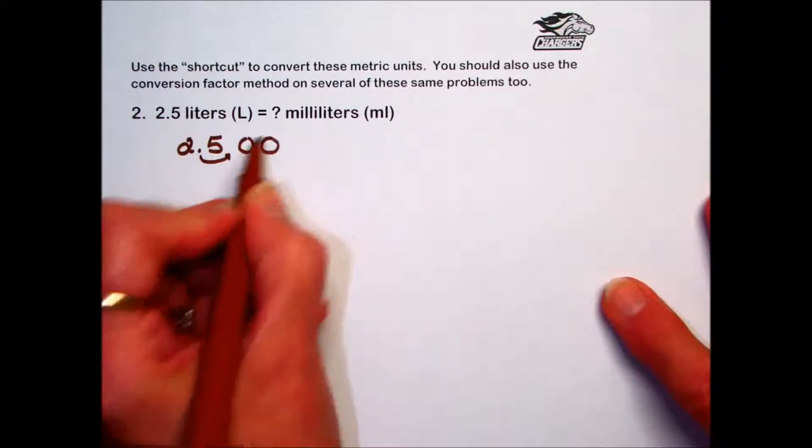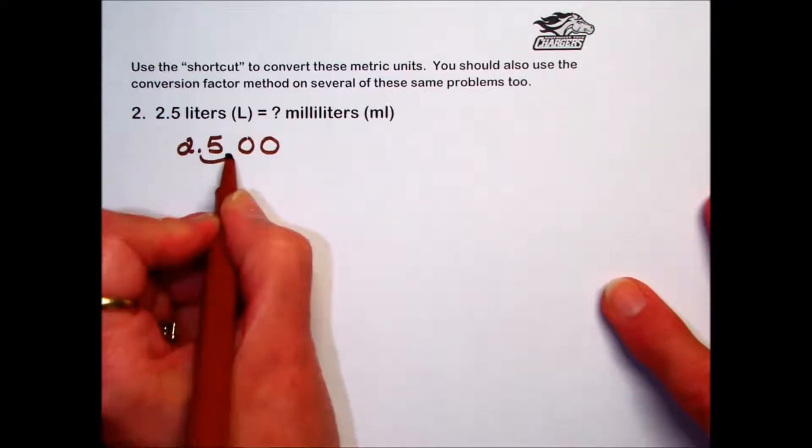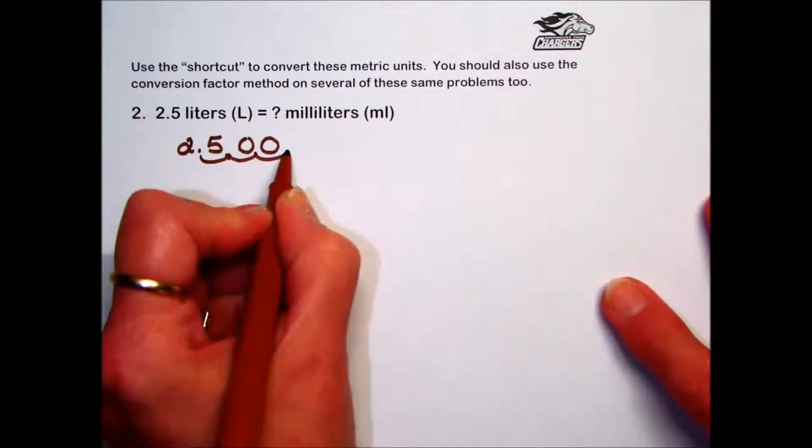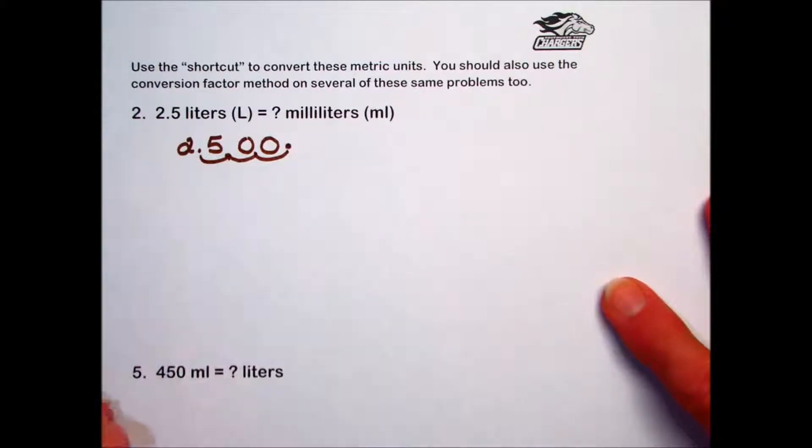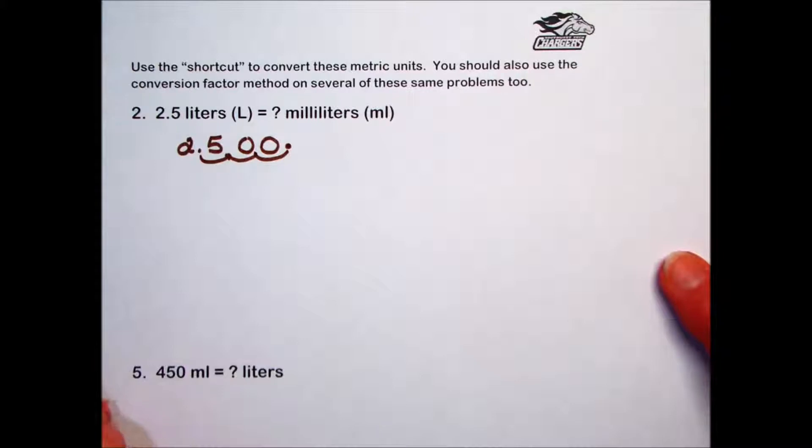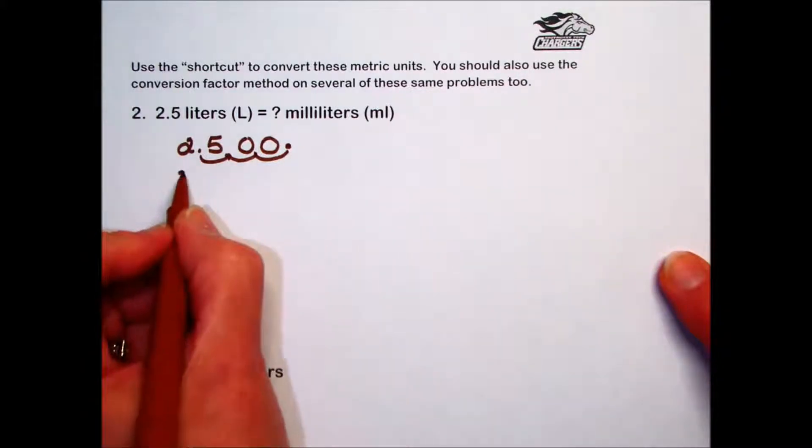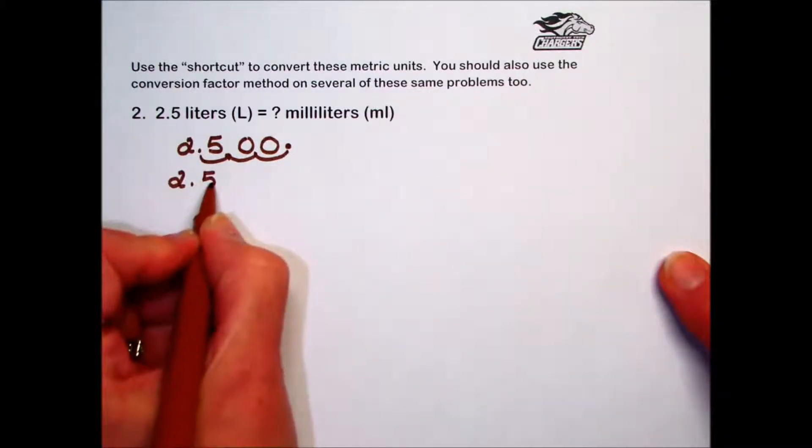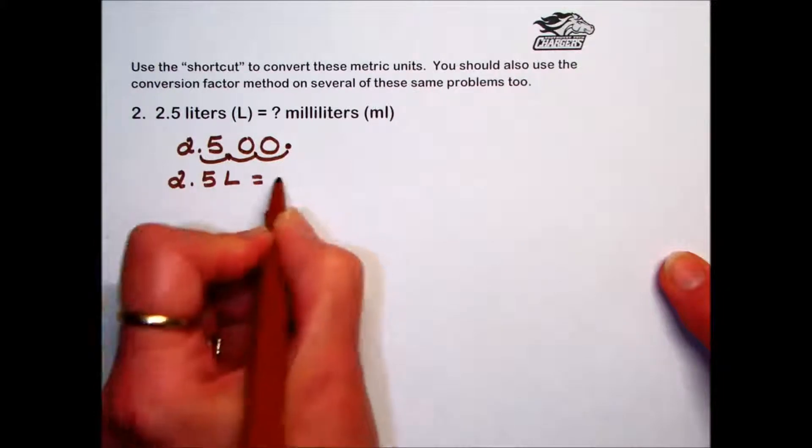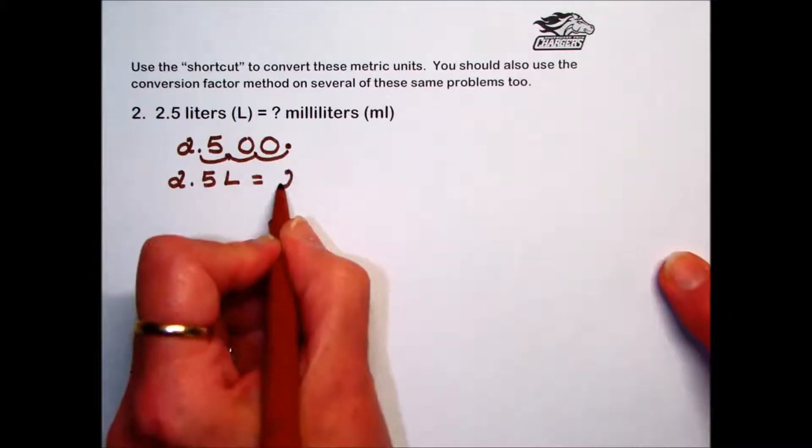We'll put zeros for placeholders, so we've moved 1, 2, 3 decimal places. Our new decimal value is at the end, so to answer this problem, 2.5 liters is equivalent to the value that we just found, 2,500 milliliters.